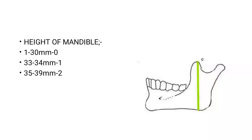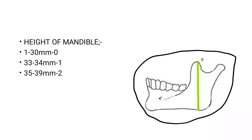Now the height of the mandible is also responsible for the difficulty. As the height of the mandible increases, the difficulty for the impacted third molar to get extracted also increases. If the height is between 1 to 30 mm, the score is zero — it can be easily removed. 31 to 34 mm scores one, and 35 to 39 mm scores two.